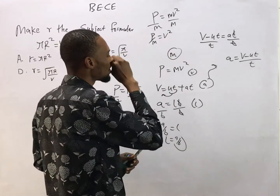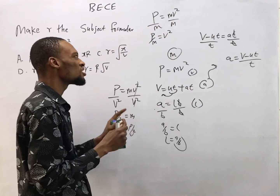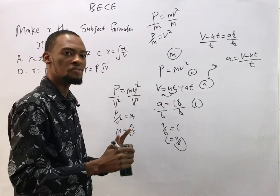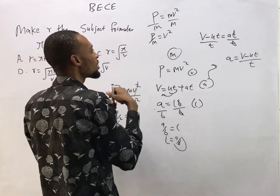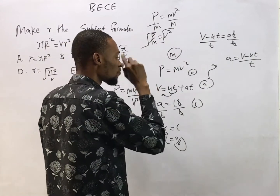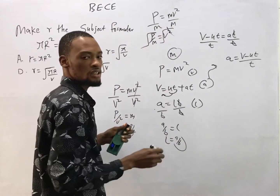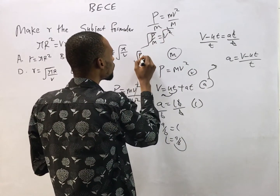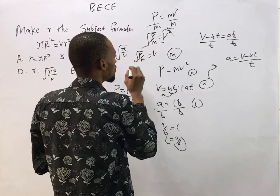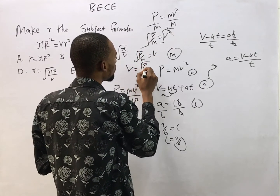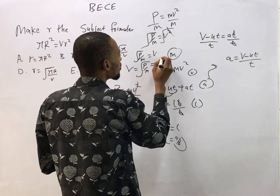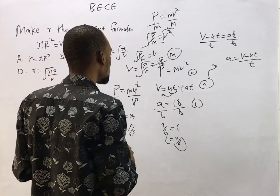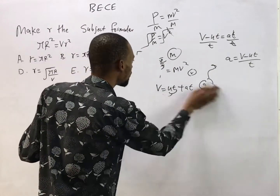To remove the square, look for the square root of both sides. Square root is used to remove square, and square is used to remove square roots. So taking the square root of both sides, the square root cancels the square, leaving v equals square root of p over m — which is the same as square root of p over square root of m. I've made v the subject formula.